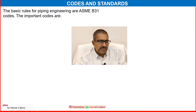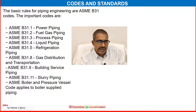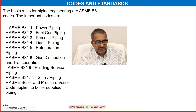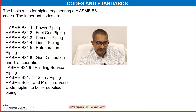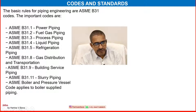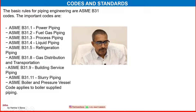The basic rules for piping engineering are the ASME B31 codes. Some of the key codes are: ASME B31.1 for power piping, ASME B31.2 for fuel gas piping, B31.3 for process piping, B31.4 for liquid piping, then refrigeration, then gas distribution and transportation, then building services, and then slurry piping.